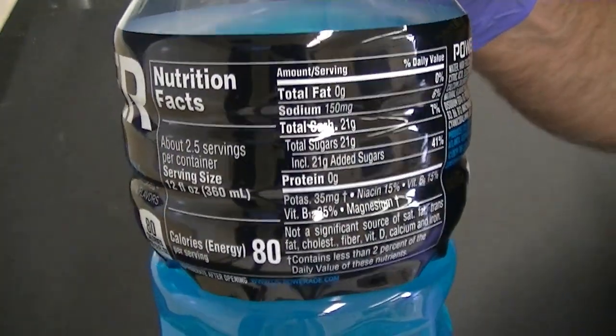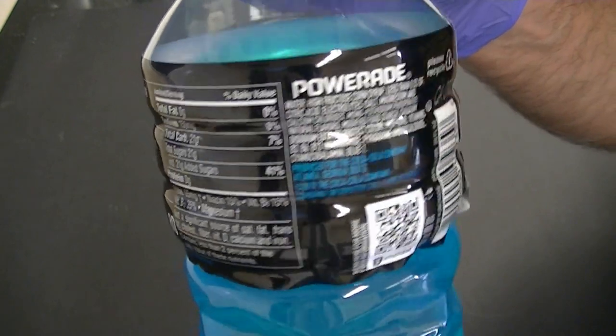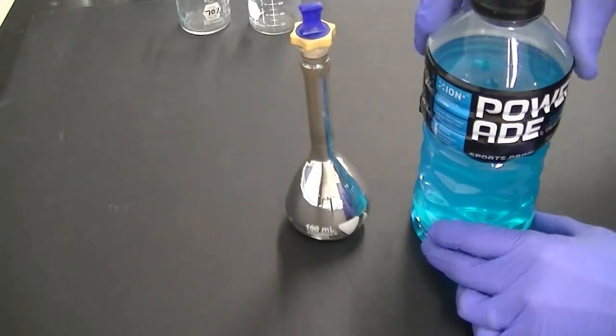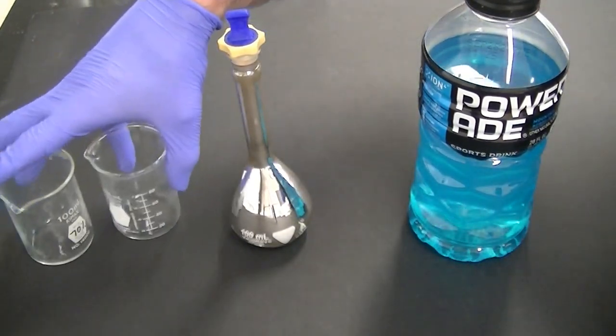Sports drinks like Powerade contain high fructose corn syrup, which is made mostly of fructose and glucose. This made me wonder if these sugars in Powerade could react with silver ions to form a silver mirror.